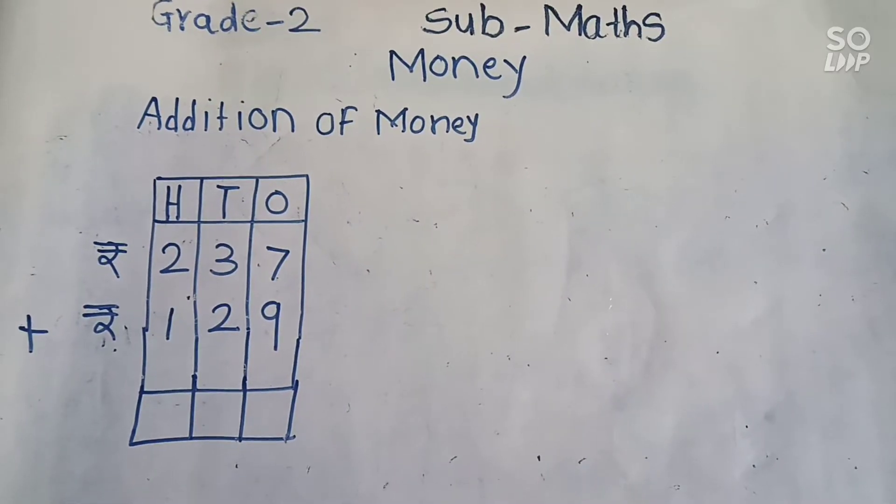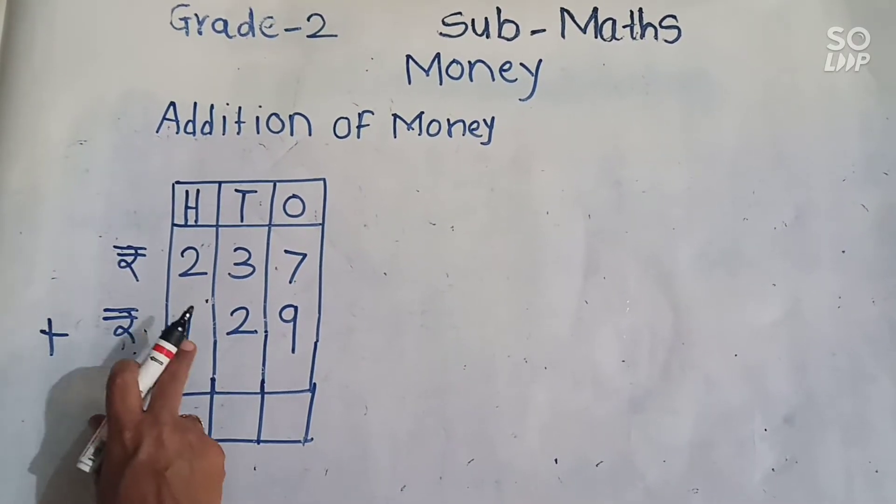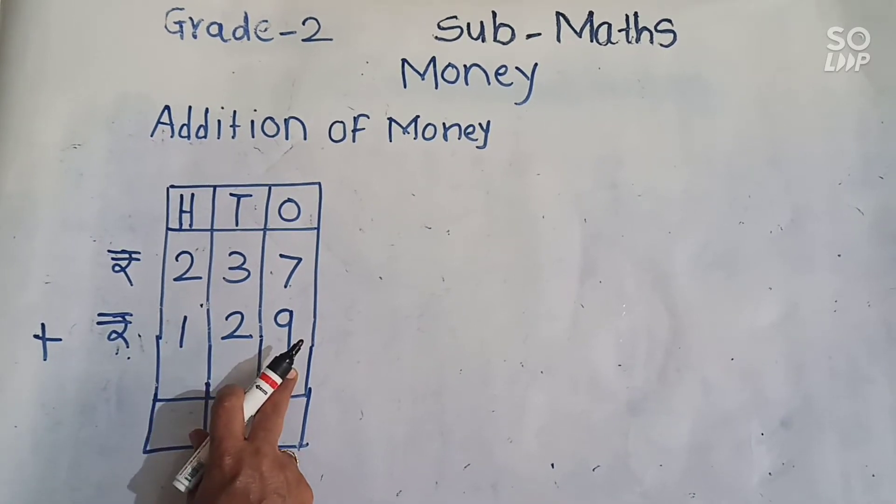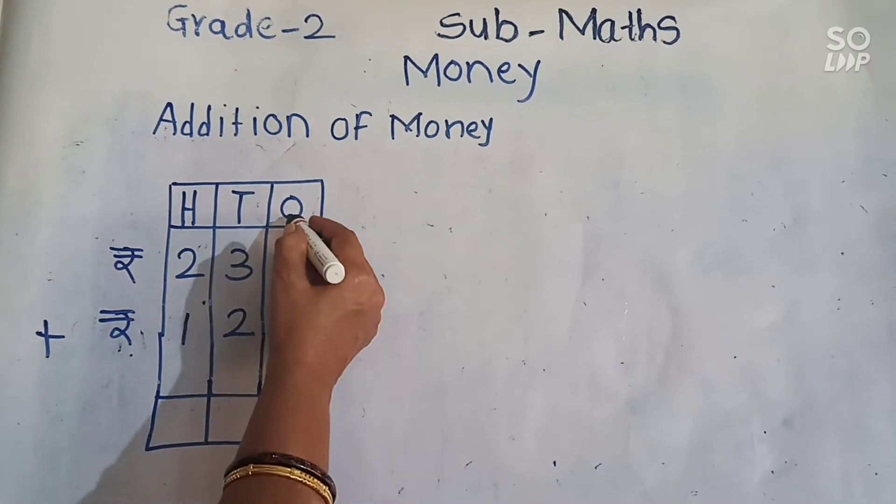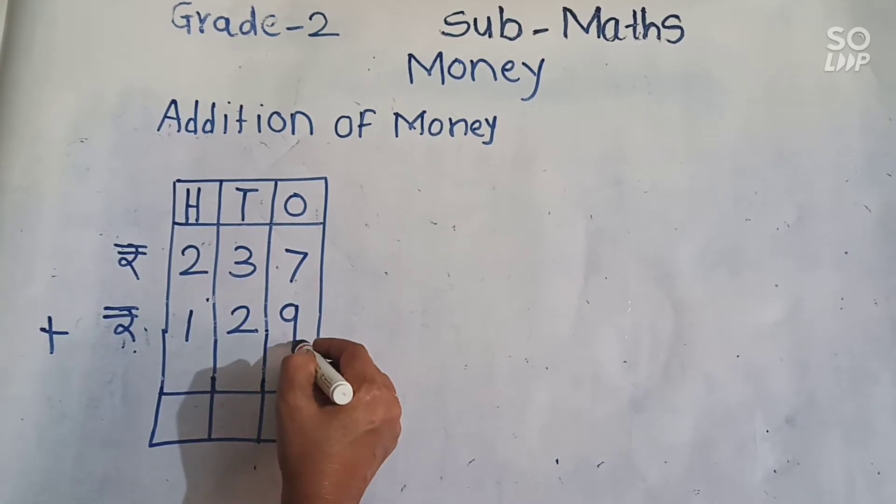Let's see another example of addition of money. Rupees 237 plus rupees 129. So first we will do addition of ones place. Seven and nine. Seven plus nine.